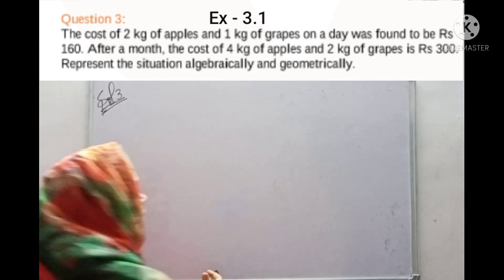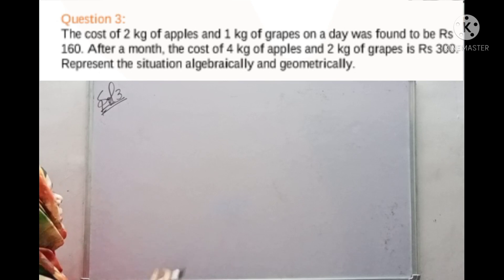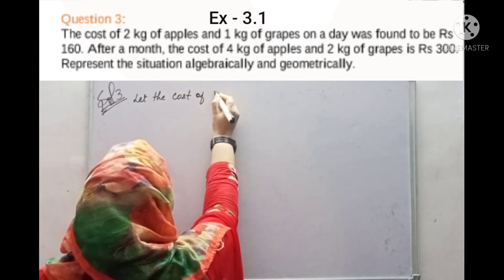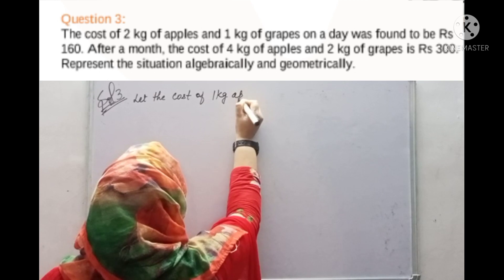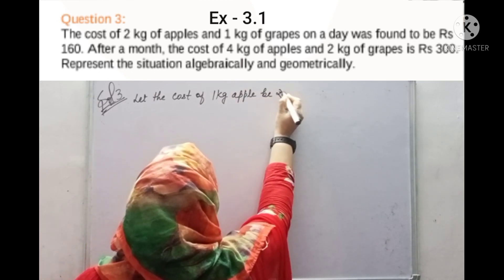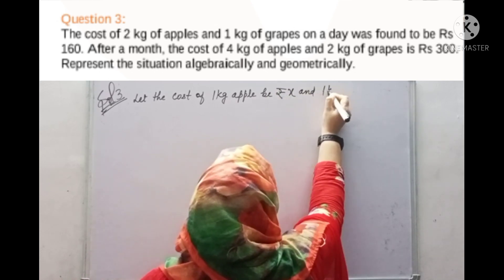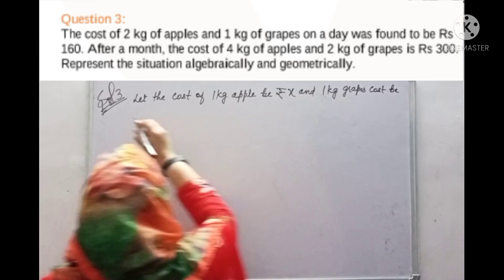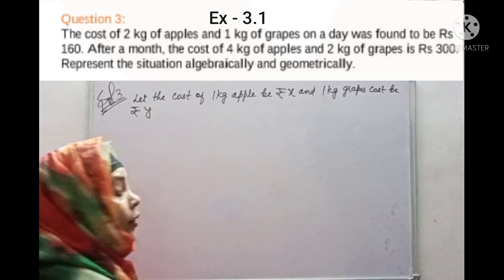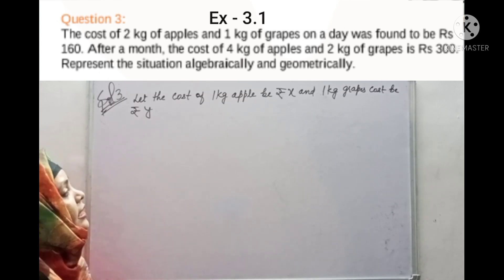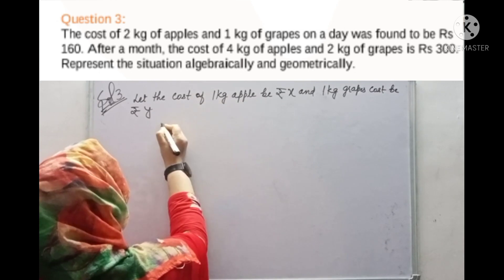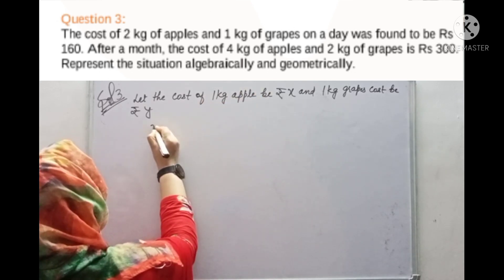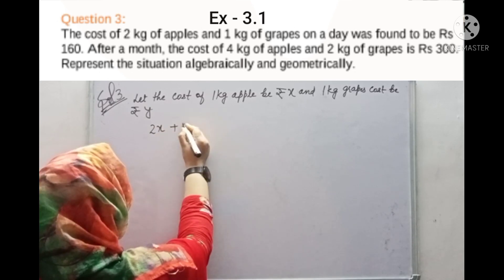Let us define variables: let the cost of 1 kg of apples be x rupees, and the cost of 1 kg of grapes be y rupees. So 2 kg of apples equals 2x, and 1 kg of grapes equals y.